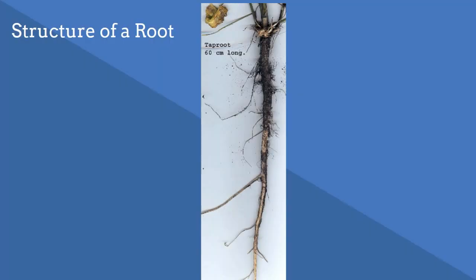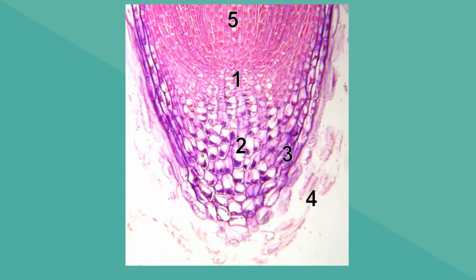Let's take a look at the structure of a root. Notice that the root is kind of pointed. At the end, it is covered with a structure called a root cap. The root cap consists of dead cells and it protects the root from rocks and other material as it grows into the soil.